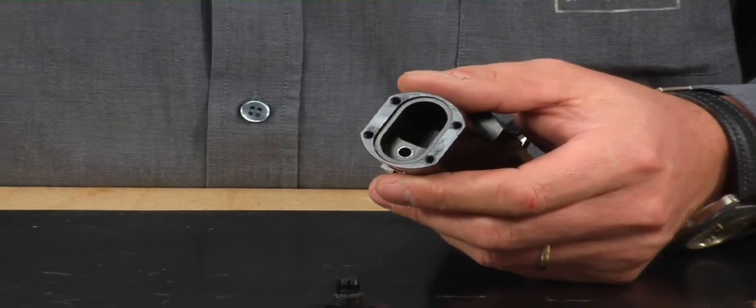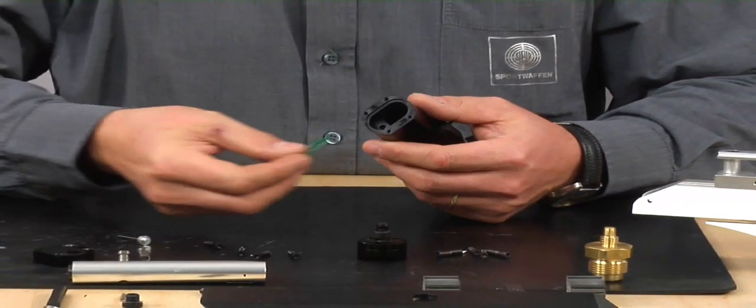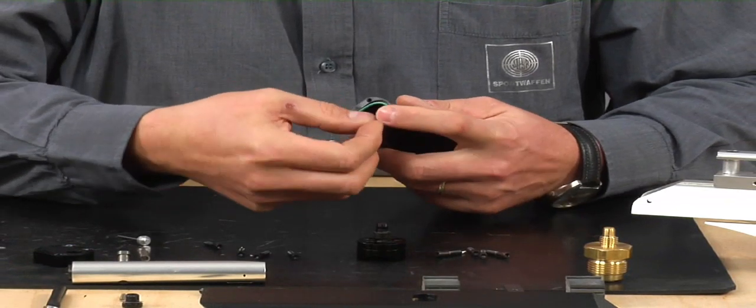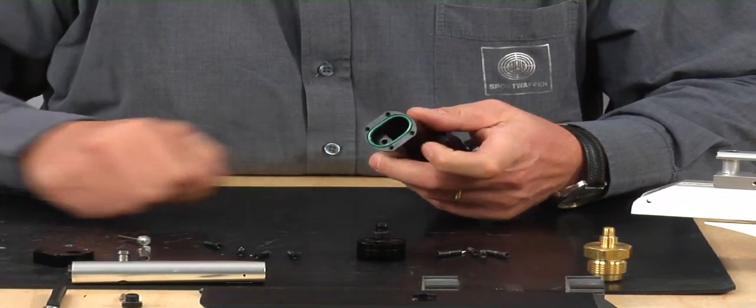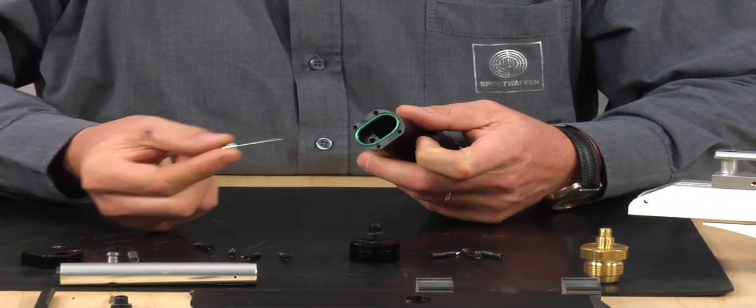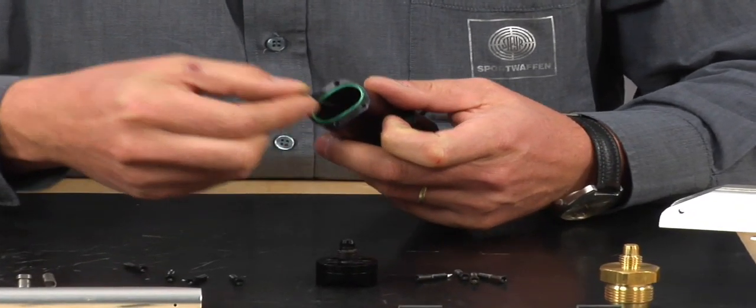Inserting the valve. Now you have to insert the valve again which is as follows. Put the o-ring in. The valve is placed in the valve hole.